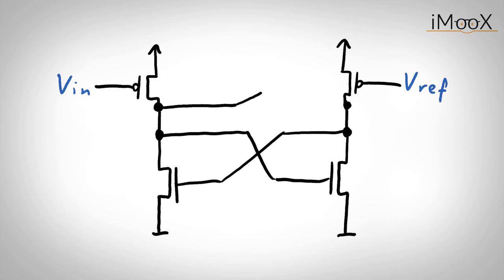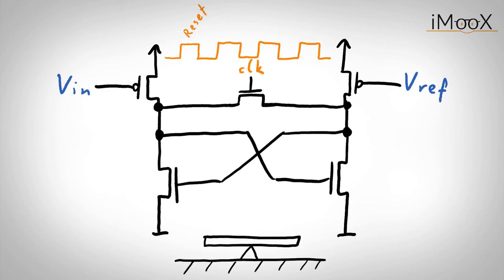This is done by adding a switch in between the two voltage nodes, in our case by adding a simple NMOS transistor. To drive the switch, we can use a clock signal. Whenever the signal is high, the latch is in the reset phase and as soon as the clock goes to low, the switch is opened and the latch starts to flip or to flop.